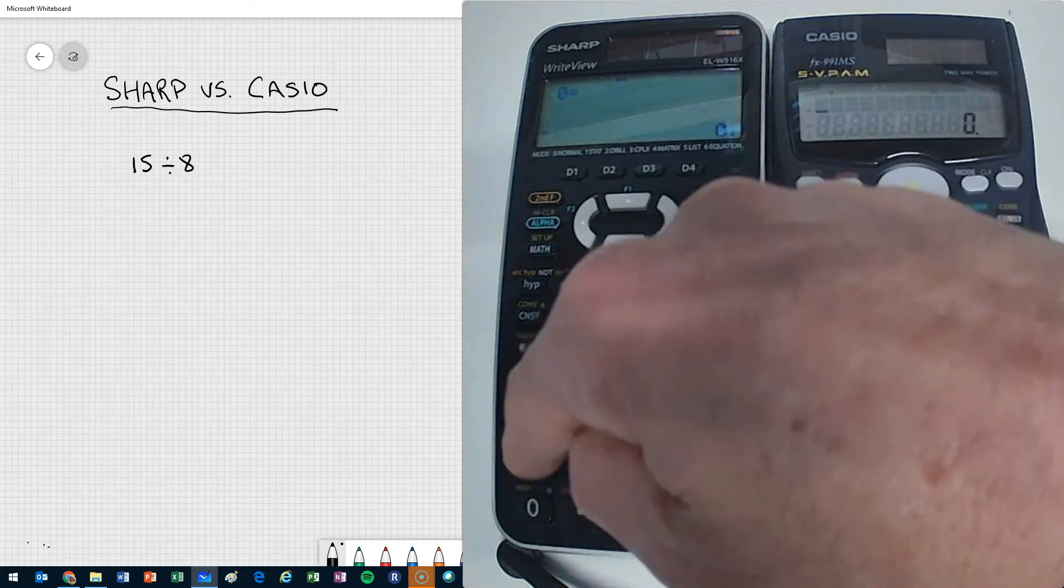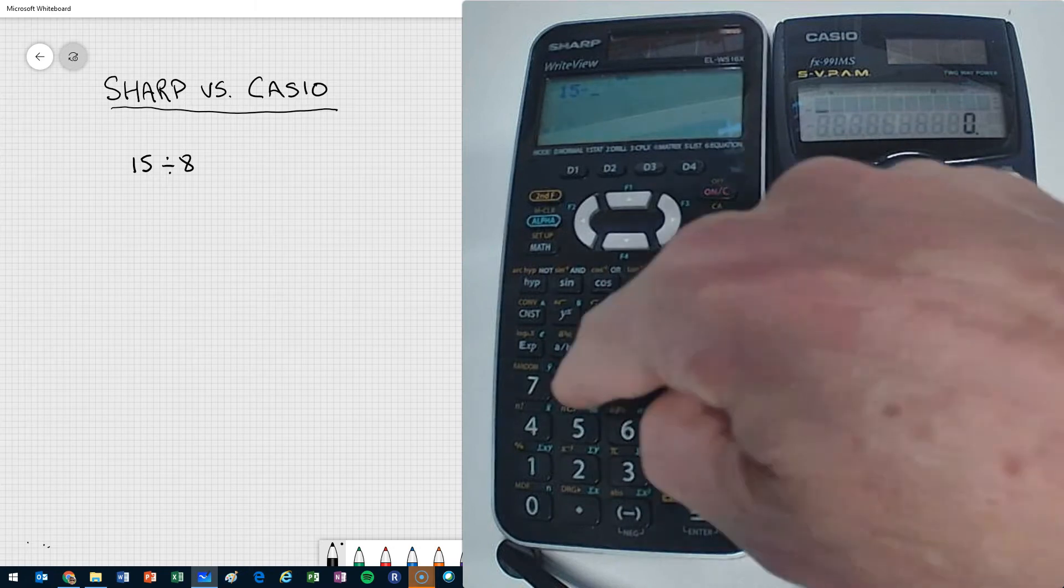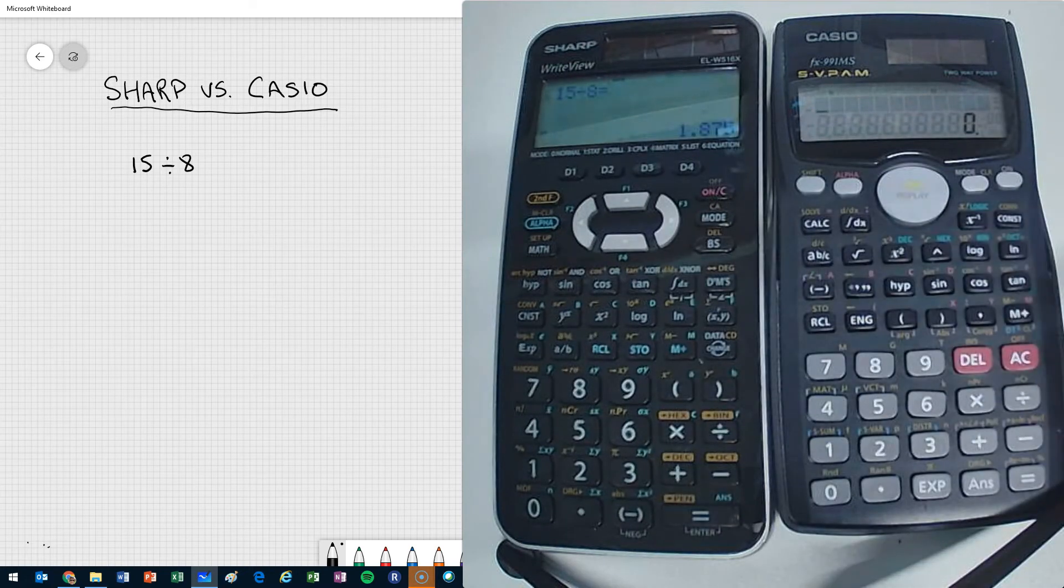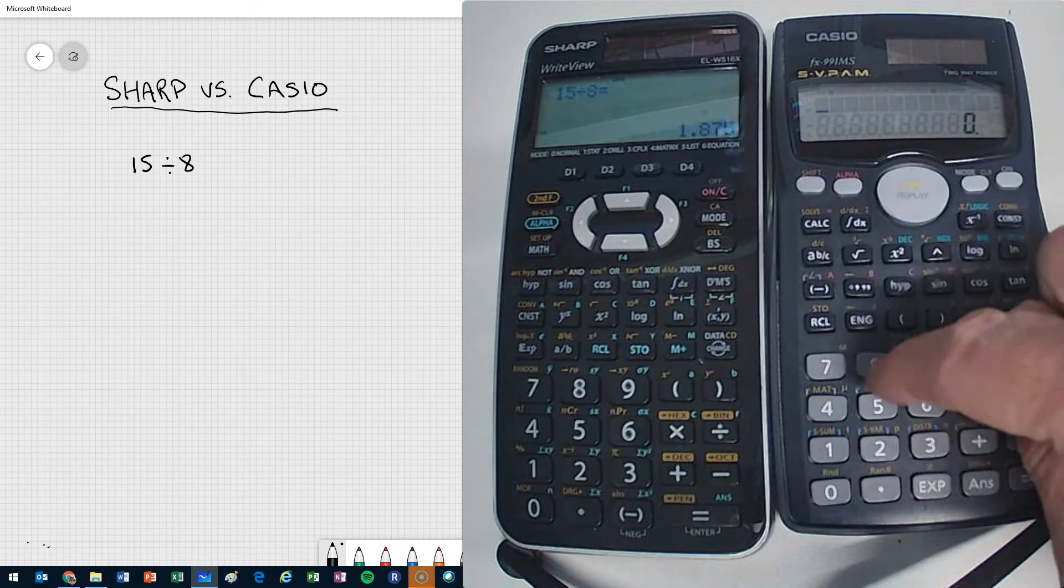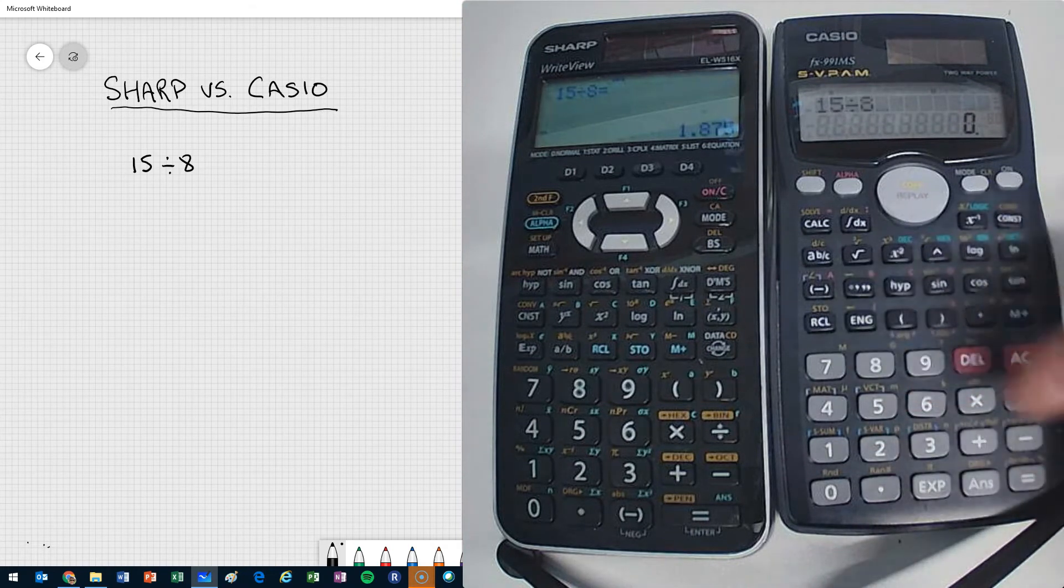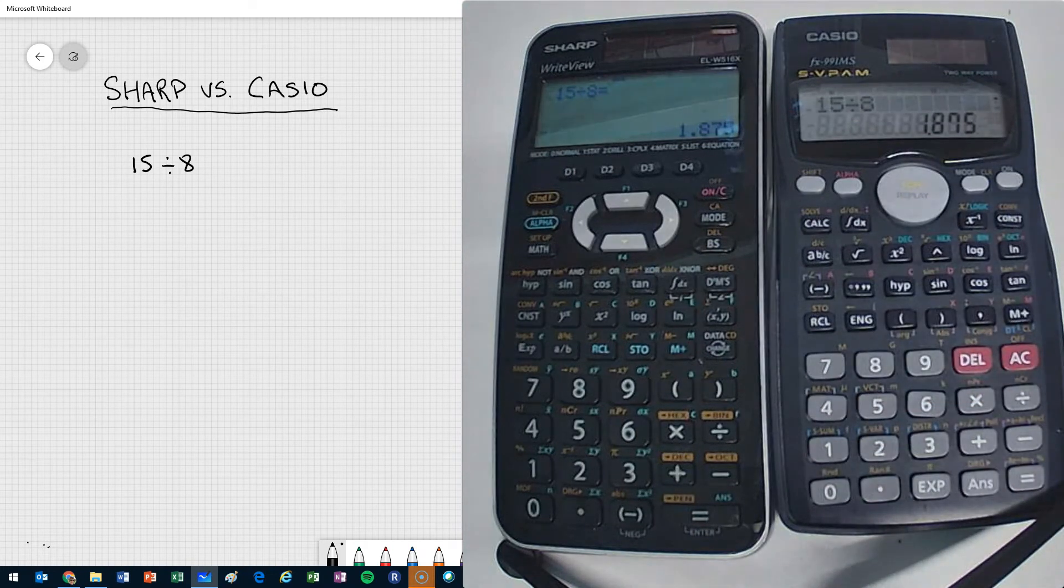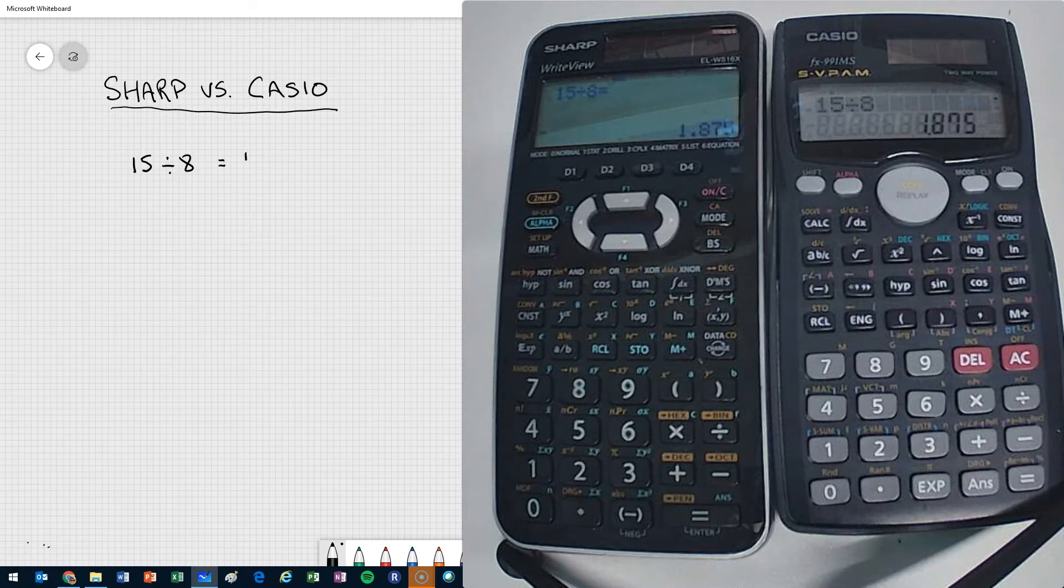So here's my SHARP, 15 divided by 8, and I get a value 1.875. 15 divided by 8 here, and 1.875. So no problem there. Both give me the same value.